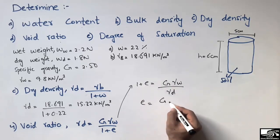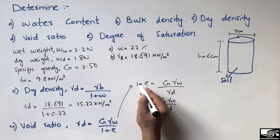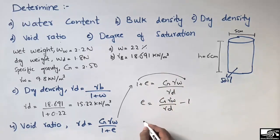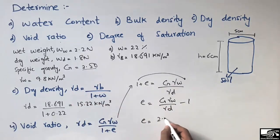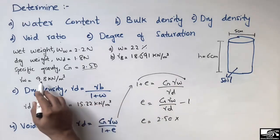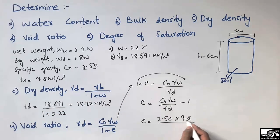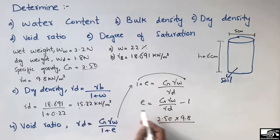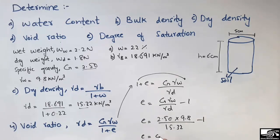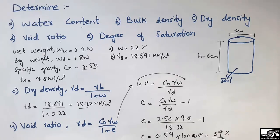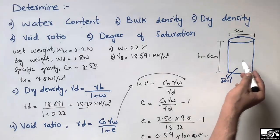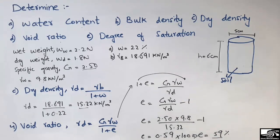Simplifying further, void ratio e equals (G times gamma w / gamma d) minus 1. Putting in the values: G is 2.5, gamma w is 9.8, and dry density is 15.32. The result comes out to be 0.59. Multiplying by 100 to express as a percentage, the void ratio is 59 percent — meaning 59 percent of the voids are present in this soil sample.